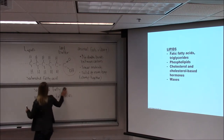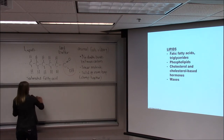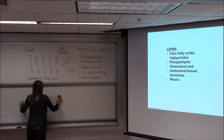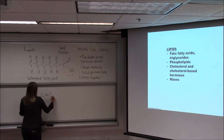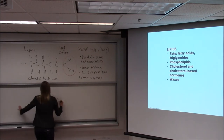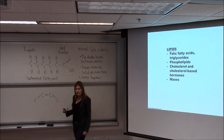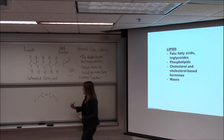Unsaturated fatty acids do have double bonds between carbons and are not linear. When you have a double bond between carbons, you get a bend or kink in the chain on either side of that rigid double bond. The carbons can't rotate around a double bond, so it tends to form a bend.